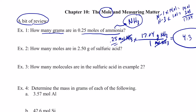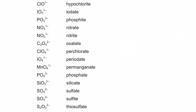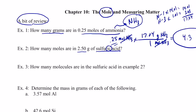Next example: how many moles are in 2.50 grams of sulfuric acid? We need the formula for sulfuric acid. It's not binary because it doesn't start with 'hydro,' but it ends in '-ic' and comes from sulfate, which is SO₄²⁻. Hydrogen acts like a metal with a 1+ charge, so the formula for sulfuric acid is H₂SO₄.